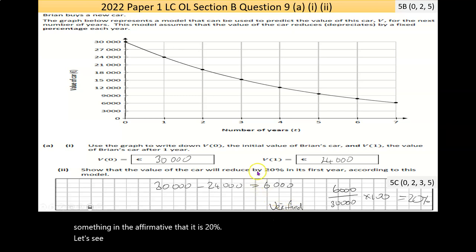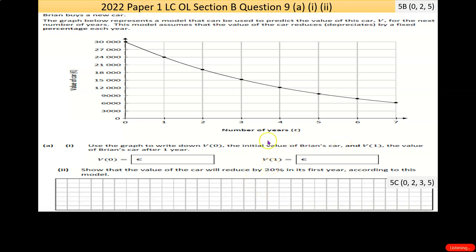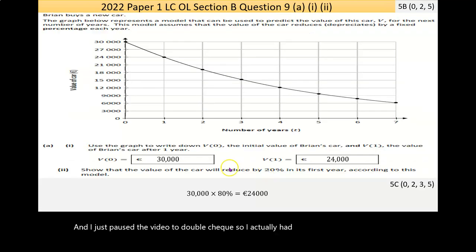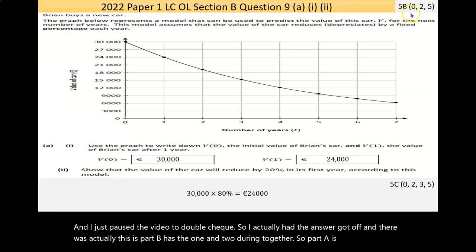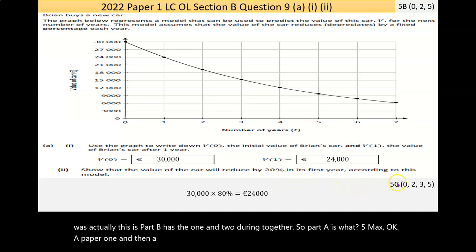Let's see what the answer is on the next page. I paused the video to double-check. This is part B has the 1 and 2 joined together. So part A is worth 5 marks. A part 1, and then A part 2 is worth 5 marks again, as you'd expect.